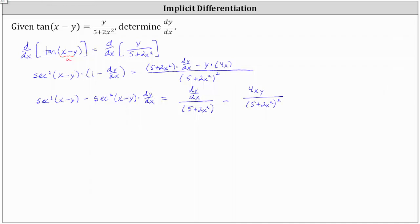Now we need to isolate the dy/dx terms on one side of the equation. Notice we have a dy/dx term on the left and on the right, and we need all the non-dy/dx terms on the other side. So let's add secant squared of the quantity x minus y times dy/dx to both sides, and also add 4xy divided by the square of the quantity 5 plus 2x squared to both sides.